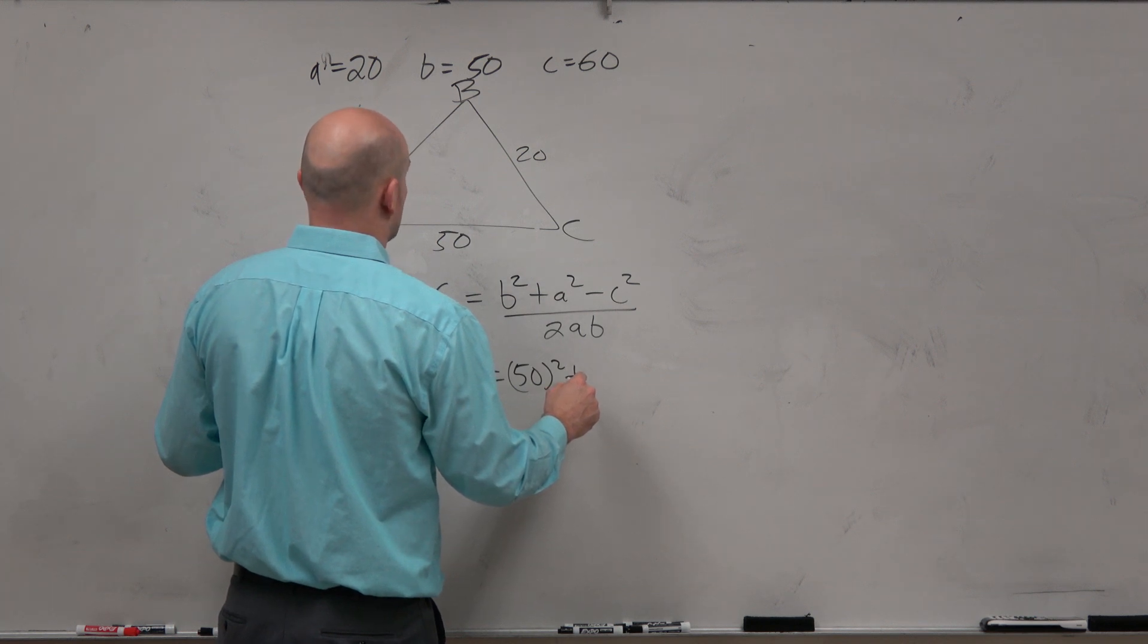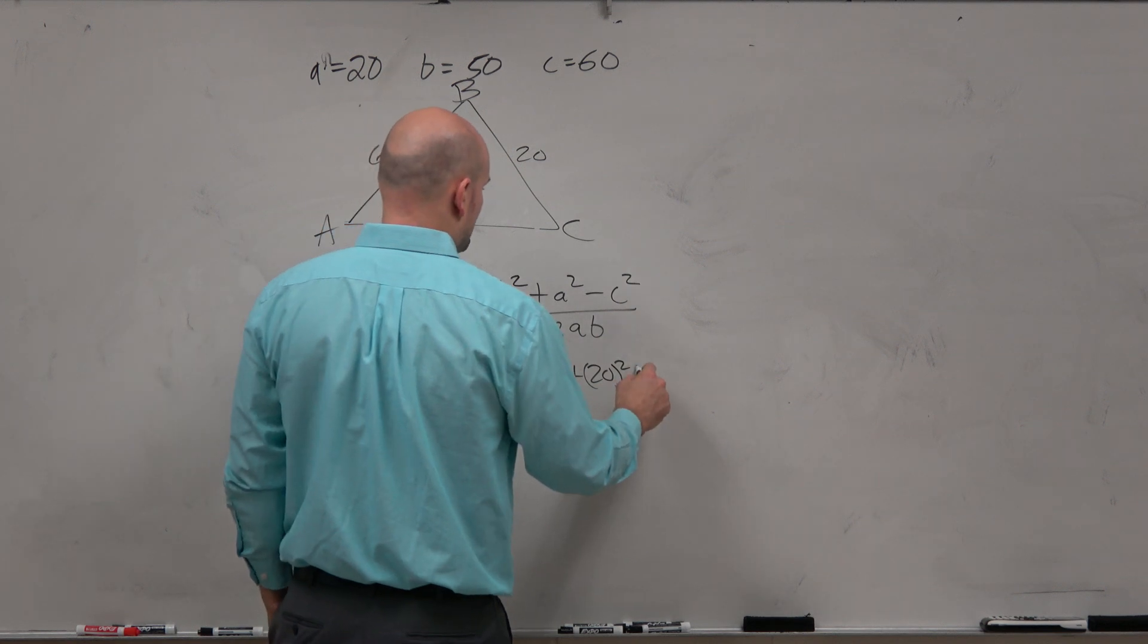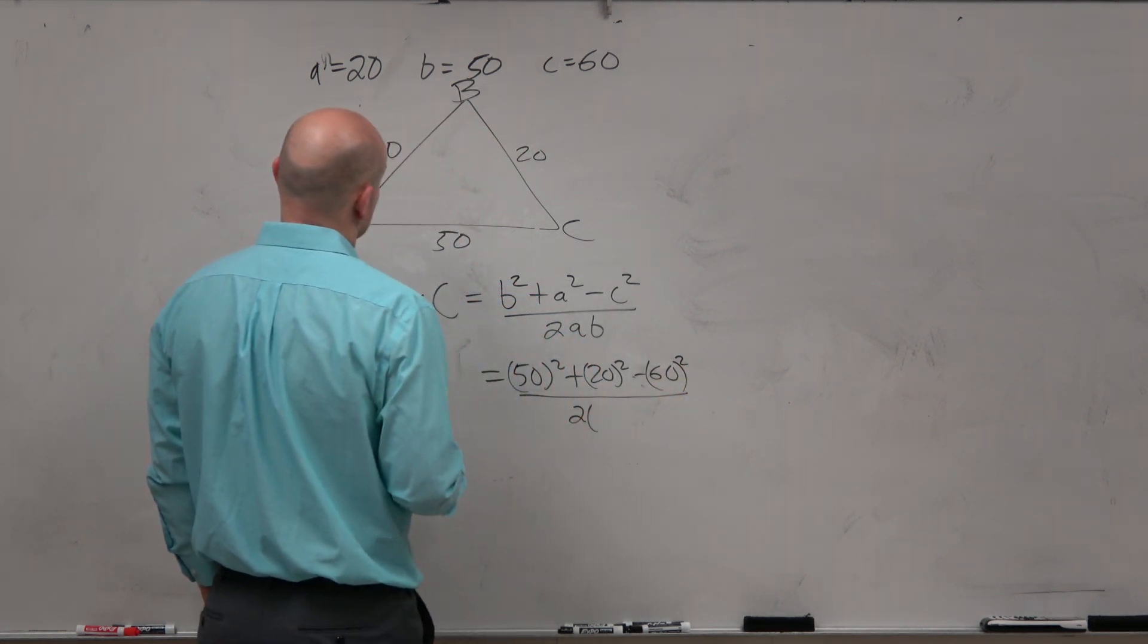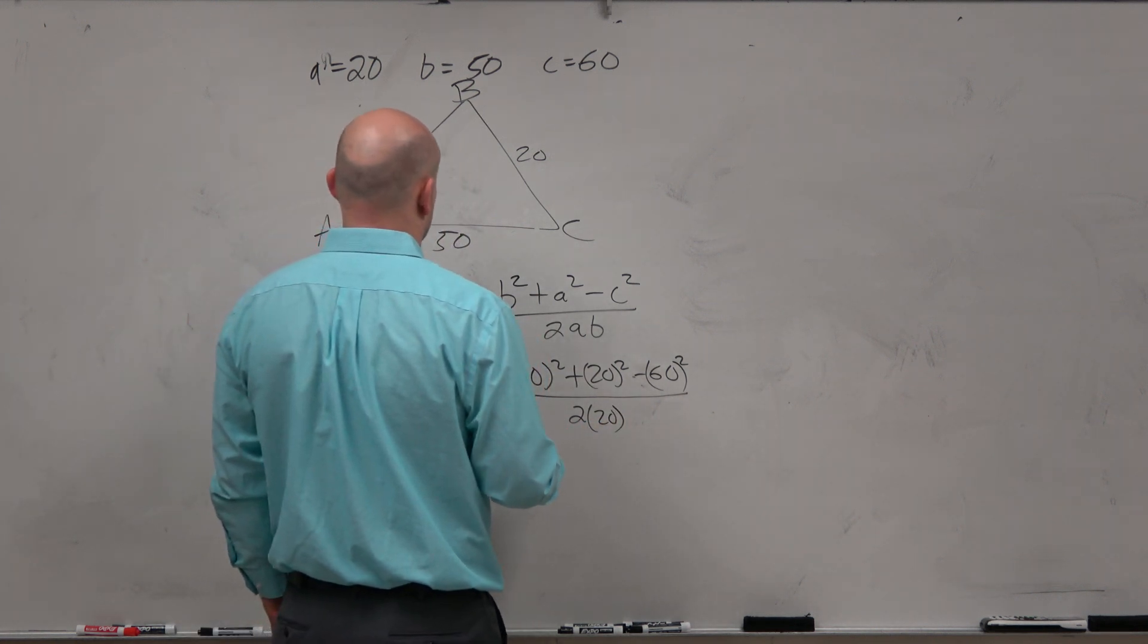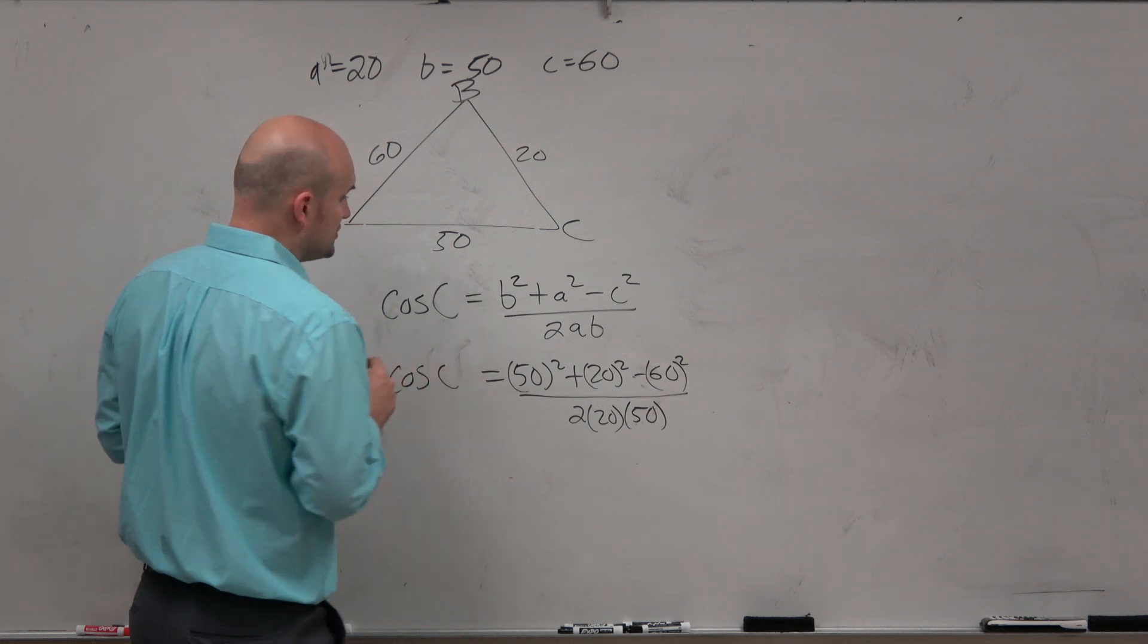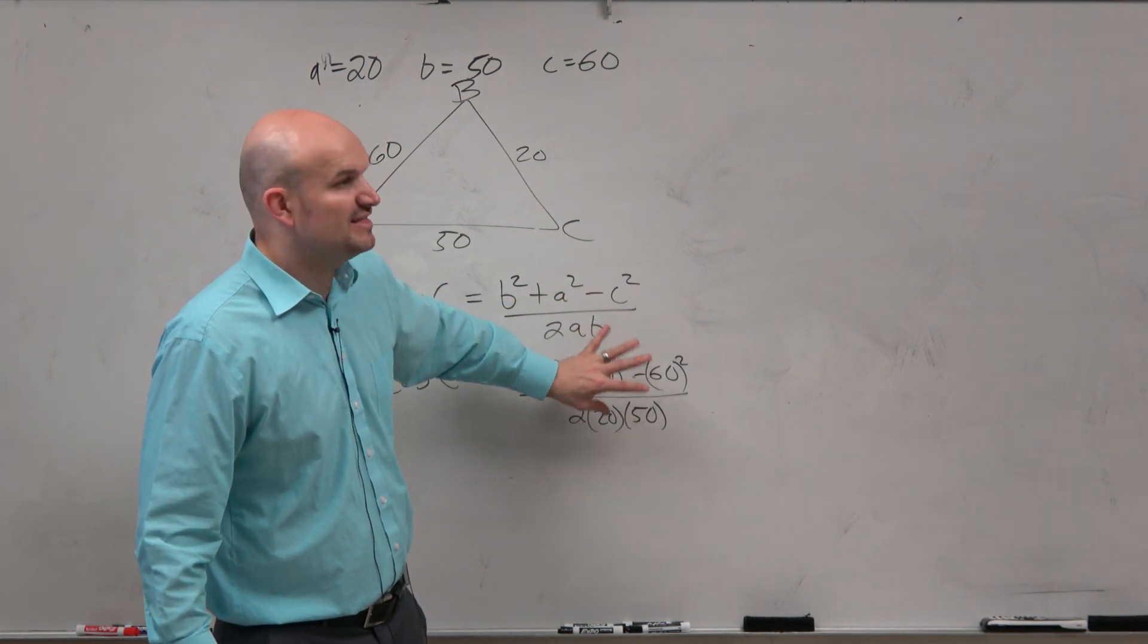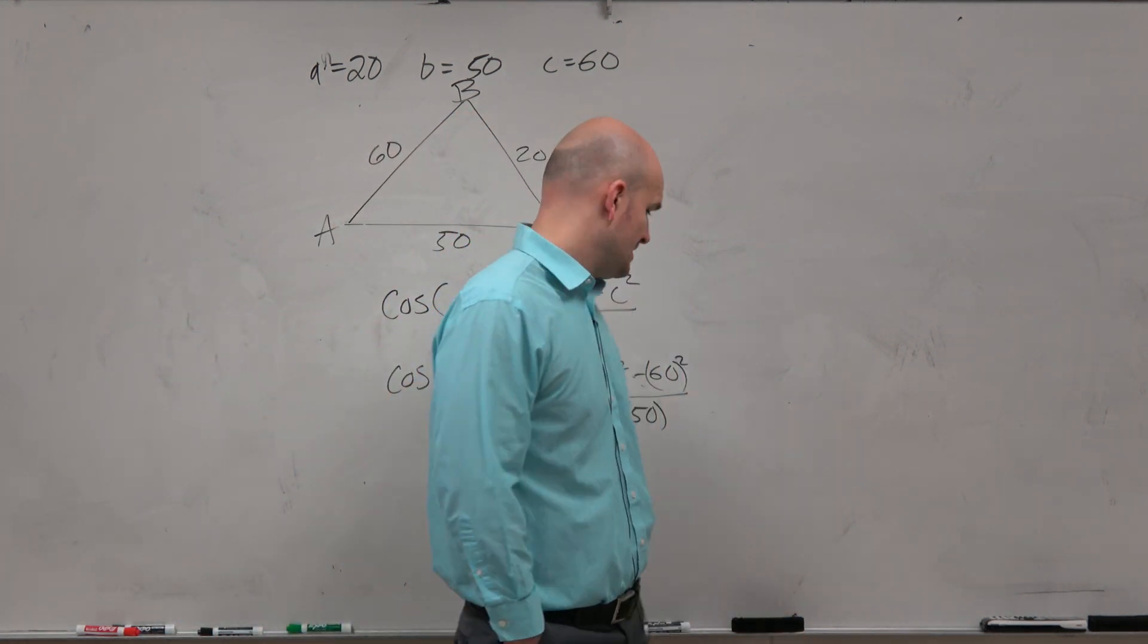All right? And then it's just a good old plug and chug. 50 squared plus A squared, which is 20 squared, minus 60 squared. Now, make sure you're typing this in correctly. What I'd recommend doing here is not typing this all at once. I'd recommend finding the numerator first, and then finding the denominator, and then dividing them. I'll show you how to type them in all at once. You're just going to want to make sure you use parentheses.